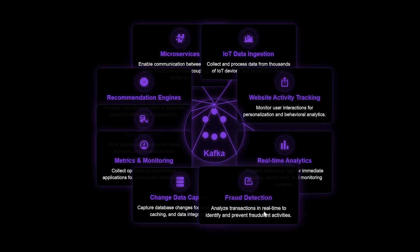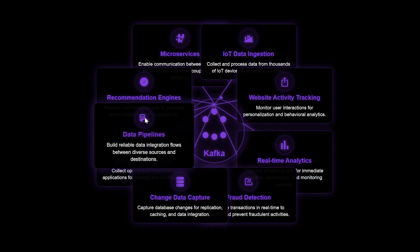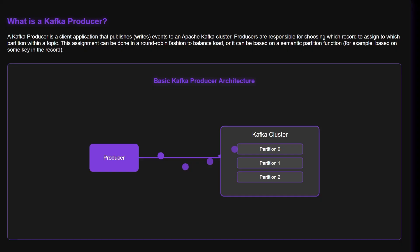First, let's talk about the core architecture. At its heart, Kafka has three main components. Producers are the applications that push data to Kafka. Think of them as writers sending messages into the system — they can be anything from your backend services to IoT devices to application logs.